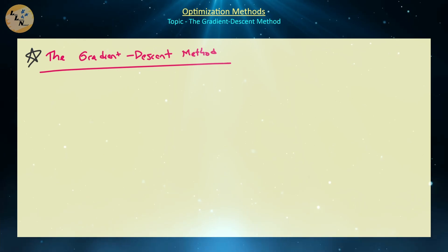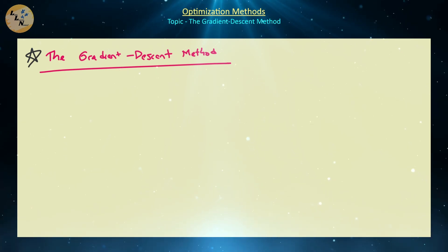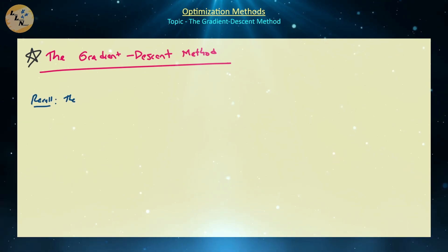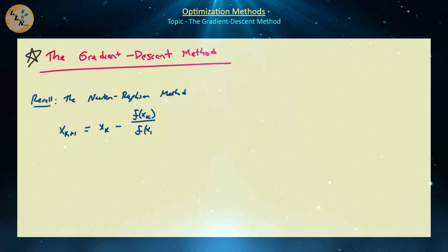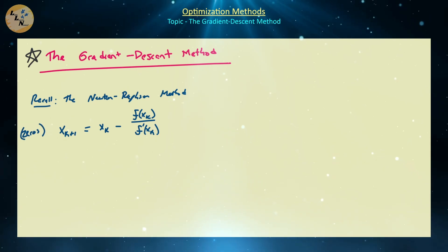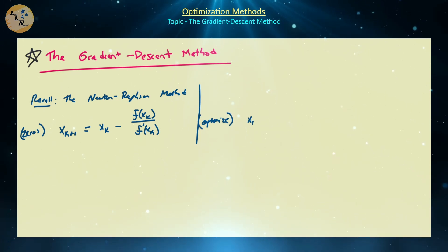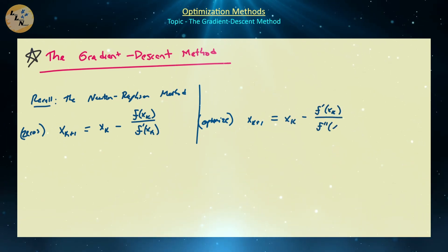To get a general grasp of what the gradient descent method is actually doing, it's very useful to understand what the Newton-Raphson method does and how it does it. The one-dimensional Newton-Raphson method is given by the iteration scheme x_{k+1} = x_k minus f(x_k) divided by f'(x_k), used for finding zeros. We can shift this to optimize a function: x_{k+1} = x_k minus f'(x_k) divided by f''(x_k).